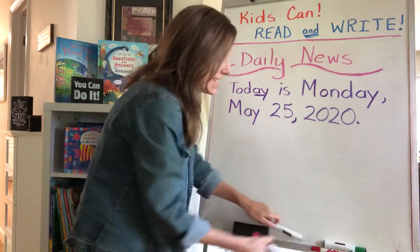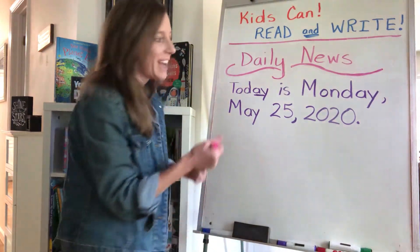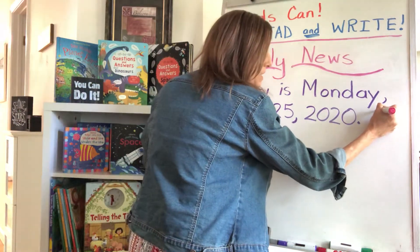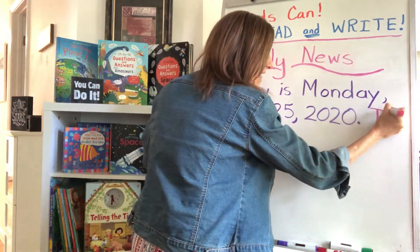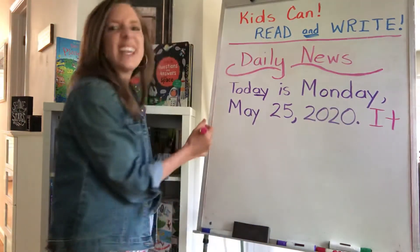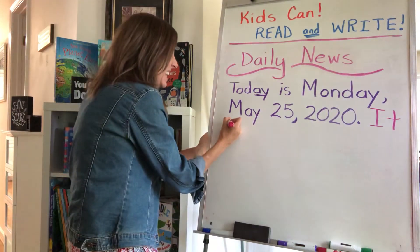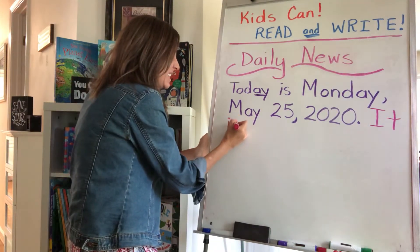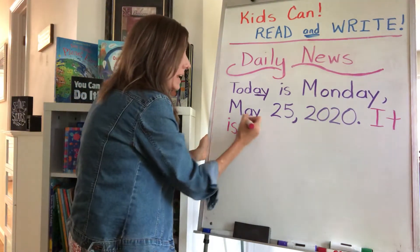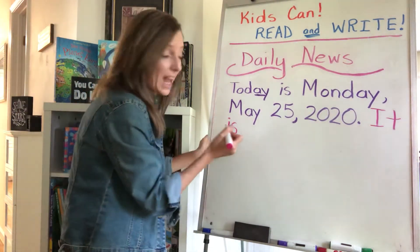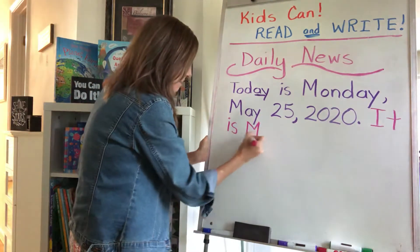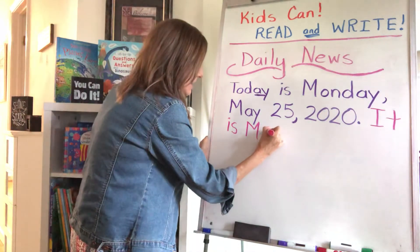It is Memorial Day — it's a holiday today. How do we spell 'it'? Start with a capital I. It. Is. Memorial Day. Now it's a holiday, so we're going to start with a capital. Another big capital M.